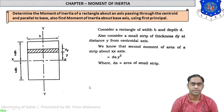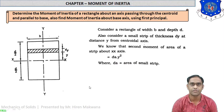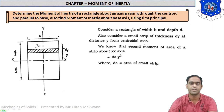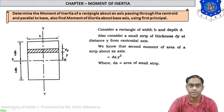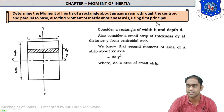Welcome back students. Today in lecture number 30 we are going to derive the basic formula for moment of inertia of a rectangular and triangular lamina. Let us check the moment of inertia of the rectangle first. The question is: determine the moment of inertia of a rectangle about an axis passing through the centroid and parallel to the base. Also find the moment of inertia about the base axis using first principles.